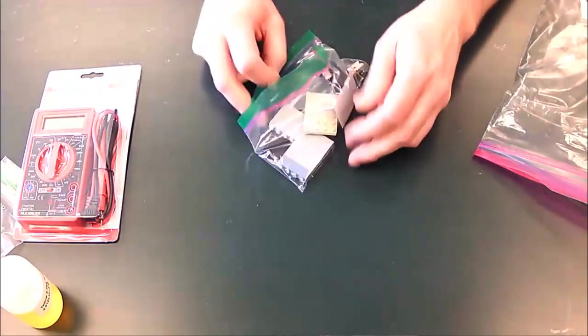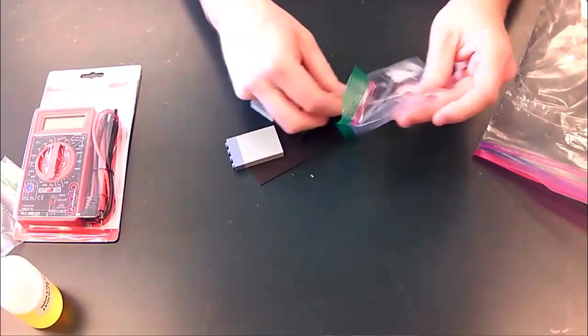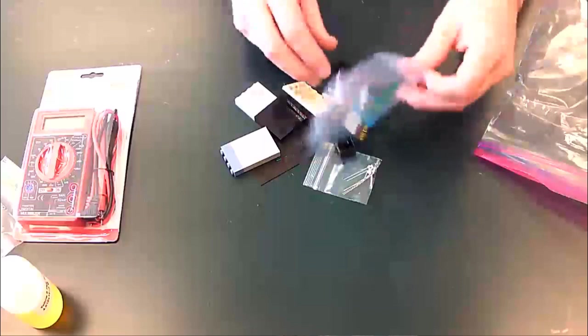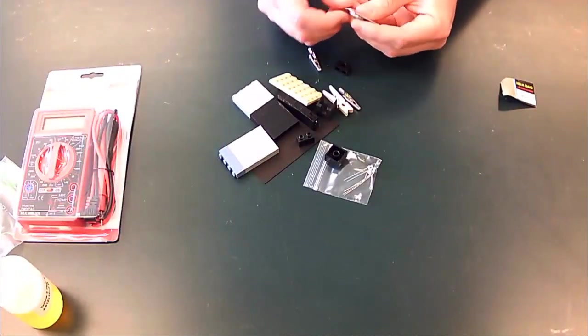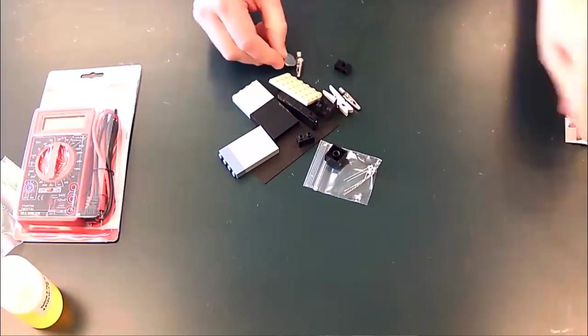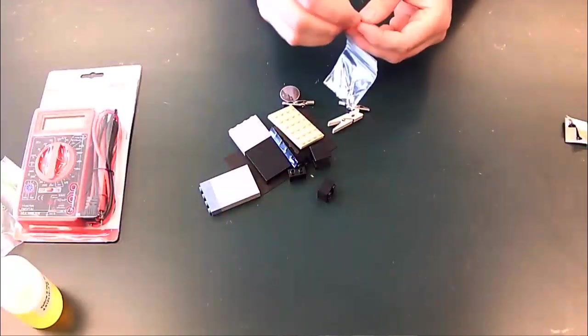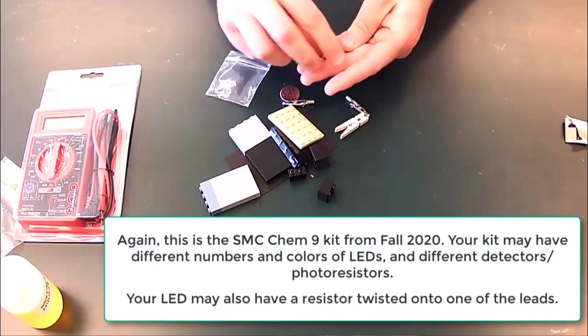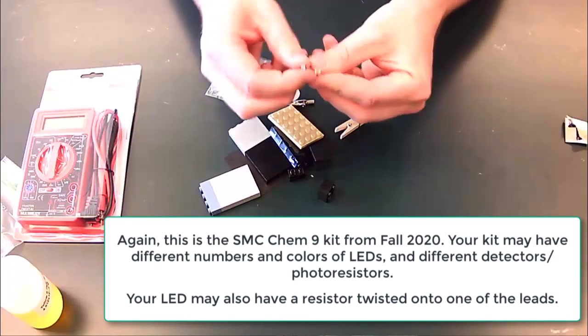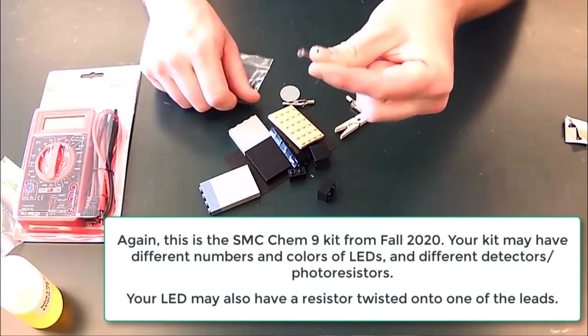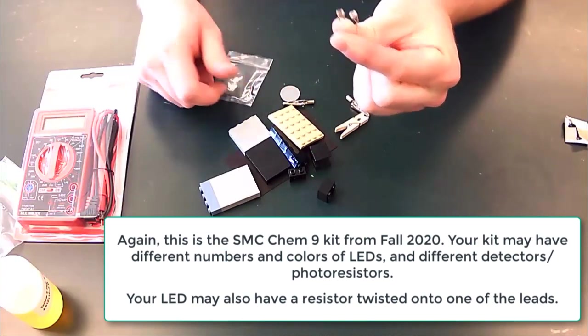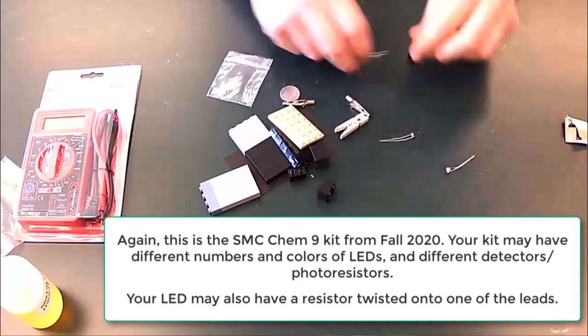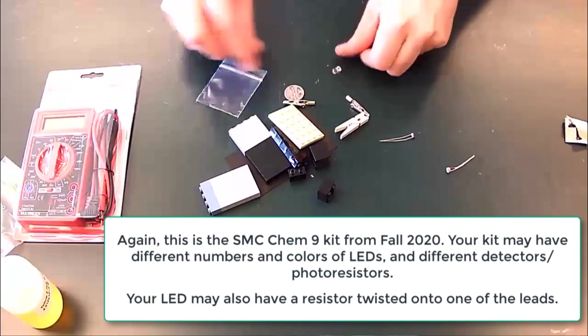Starting with the bag of electronics and Legos first, in here we have the essence of the entire colorimeter. We have the battery that's the power source. We have the LED that's the light source, which is in this little baggie. And we have the photoresistor, which is the detector. You have two photoresistors in your kit, honestly because I was worried that one of them wasn't going to work. The LEDs are a little more rock solid, so you only have one of those.